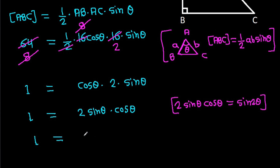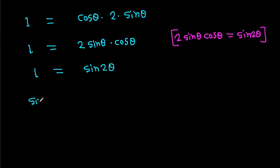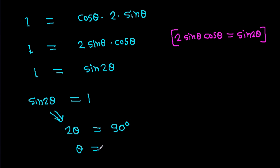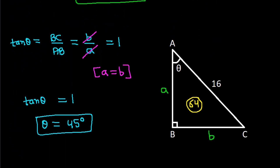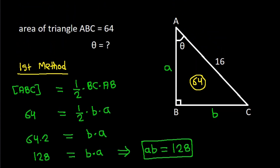So we have sin 2 theta equals 1. That means 2 theta equals 90 degrees, so theta equals 90 degrees over 2, which is 45 degrees. Therefore, theta is 45 degrees. Thank you.